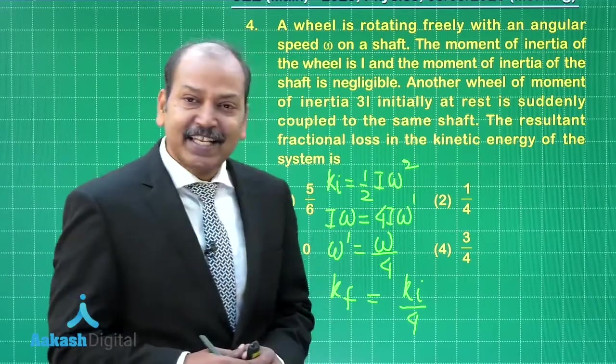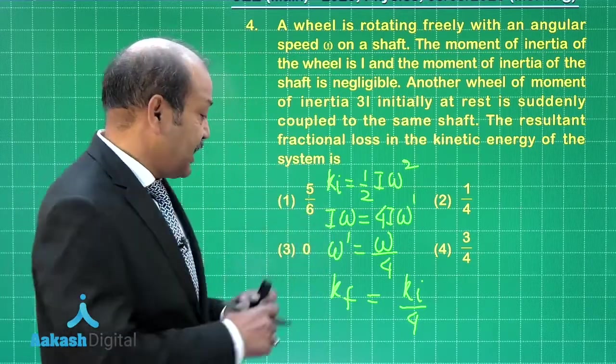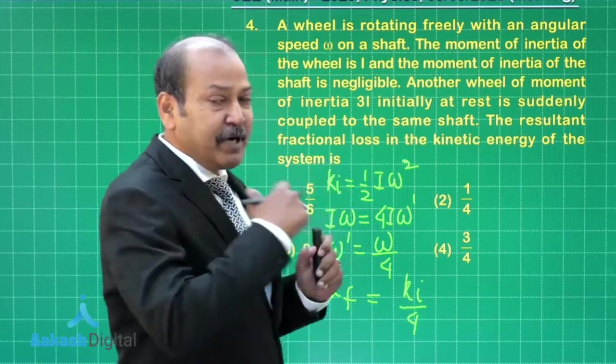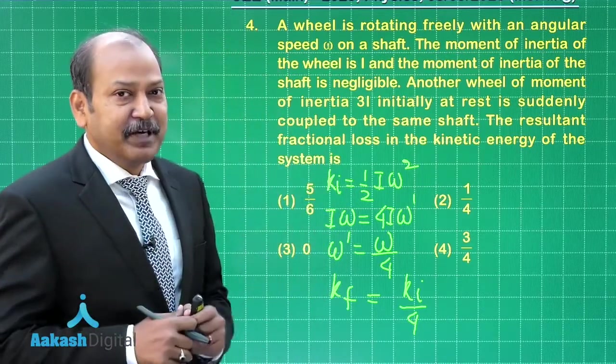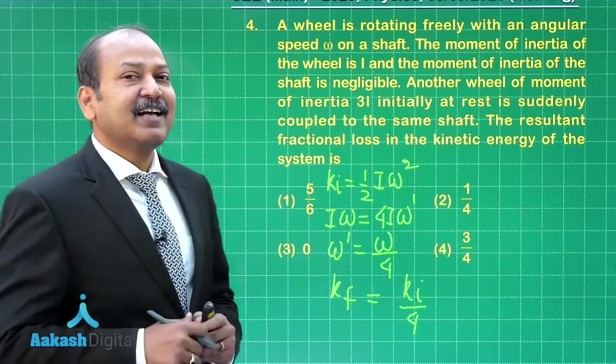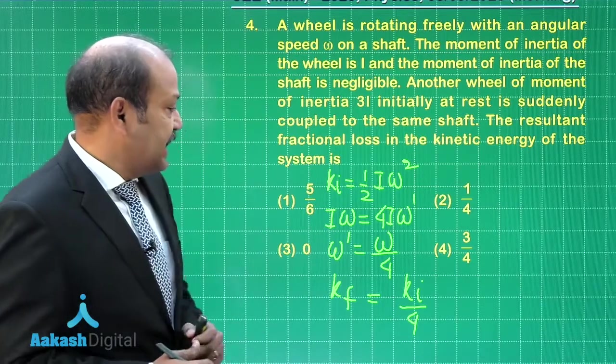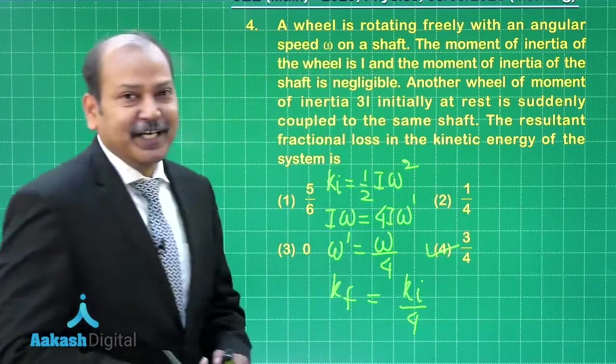What is the fractional loss in the kinetic energy? Well, the loss itself will be 3k_I by 4, and that divided by k_I is 3 by 4. Clearly the fractional loss in the kinetic energy is 3 by 4, and that means among the options option 4 is the correct one.